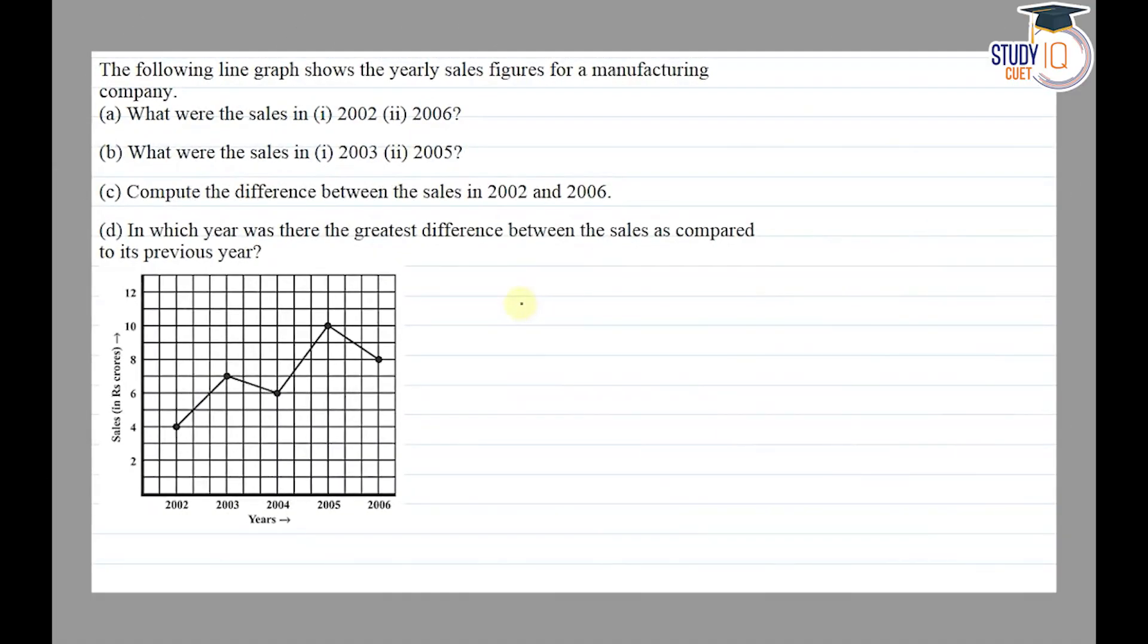Hello everyone, this question appears in Class 8 NCERT chapter on introduction to graphs. This is the second question of exercise 15.1. The question says that the following line graph shows the yearly sales figures for a manufacturing company. We have a graph given in which we have x-axis as years and y-axis as sales given in rupees crores.